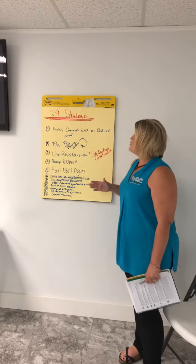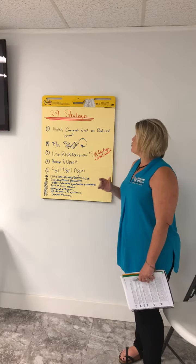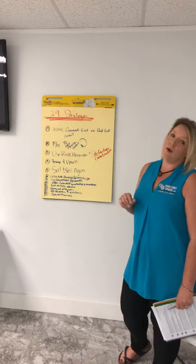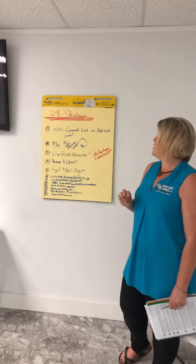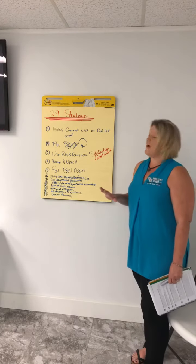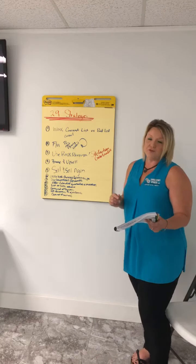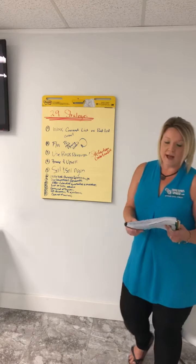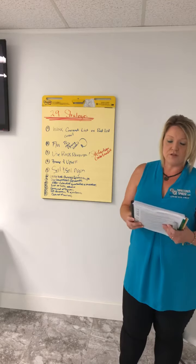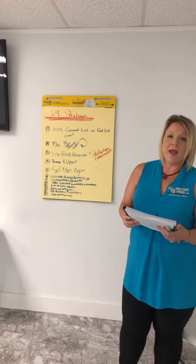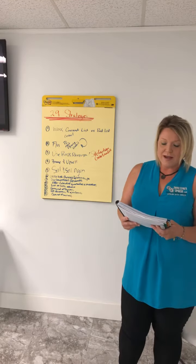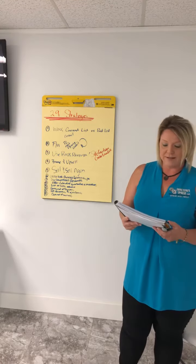So of the 29 strategies, we've gone through 12. Number one: work your current or past list. Number two: follow up. Number three: use risk reversal. Number four: bumping and upsell. Number five: sell and sell again. Number six: utilize that host-parasite relationship. Number seven: use your competitor's resources and profits. Number eight: offer a guarantee and incentive.